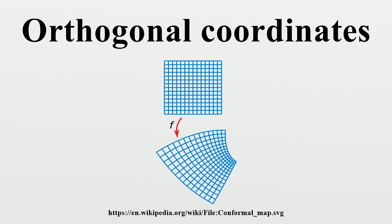But in cylindrical coordinates the problem becomes one-dimensional with an ordinary differential equation instead of a partial differential equation. The reason to prefer orthogonal coordinates instead of general curvilinear coordinates is simplicity. Many complications arise when coordinates are not orthogonal. For example, in orthogonal coordinates many problems may be solved by separation of variables — a mathematical technique that converts a complex d-dimensional problem into d one-dimensional problems that can be solved in terms of known functions. Many equations can be reduced to Laplace's equation or the Helmholtz equation. Laplace's equation is separable in thirteen orthogonal coordinate systems, and the Helmholtz equation is separable in eleven.